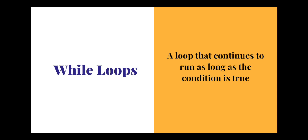A while loop, on the other hand, is a loop that continues to run as long as the condition is true. This loop is normally used when you have no idea how many times the program needs to run, but you do know when it needs to stop. For example, if you're working as a postal person delivering mail, you continue until you have no mail left or the time hits the end of your shift. You don't know how many doors you'll stop at — it depends on how much mail is in the bag and when you get off work.